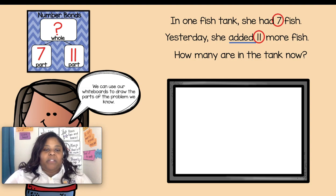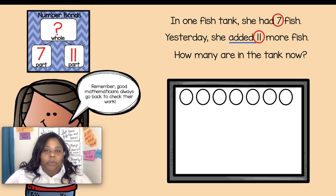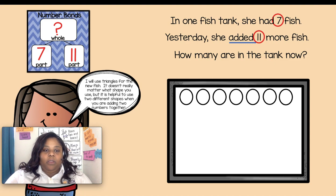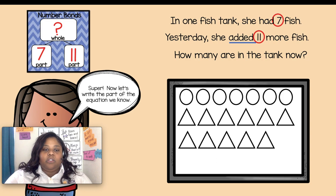We can use our whiteboards to draw all the parts of the problem we know. We know that there are seven fish in the tank, so I'm going to use little circles to show the fish. Let's recount and make sure we drew seven. Good job! Remember, good mathematicians always go back and check their work. Yes, we drew seven fish. Now what should we draw? That's right — we need to draw the other part we know. Lola's aunt added 11 more fish, so I will use triangles for the new fish. It doesn't really matter what shape you use, but it is helpful to use two different shapes when you're adding numbers together. Let's recount the triangles to make sure we drew 11.